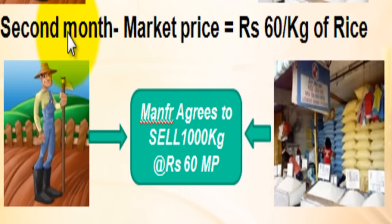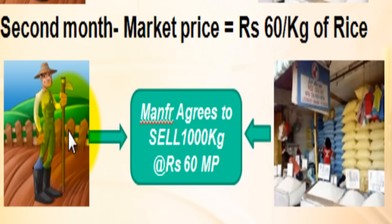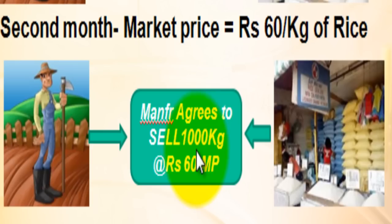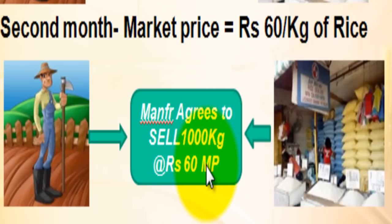Now comes the second month. The market price is Rs 60 per kg. The farmer is worried because the price of rice is rising. The manufacturer, however, thinks this is just a price spike and a good price for selling. So both the farmer and the distributor enter into a second contract, where the manufacturer or distributor agrees to sell 1000 kg of rice at Rs 60 to the farmer.